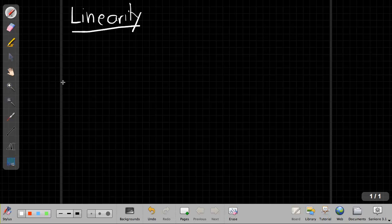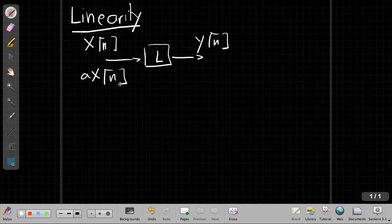The idea of a linear system is that if I have scaled versions of the input, if I have a normal input of x of n, I put it into a linear system, I get some output y of n, and then if I put a scaled version that's been ramped up by some constant amount a, the output will be scaled up by the same amount.